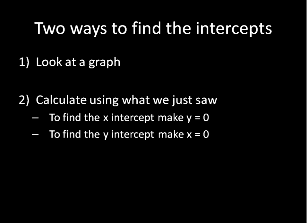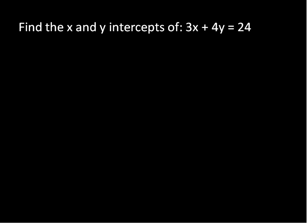So there are two ways to find intercepts. First off, if you're given a nice clear graph, you can just look at it and see when does it cross the x-axis and when does it cross the y-axis. When we're not given a graph, or if the graph isn't terribly clear, you can calculate using just what we saw. To find the x-intercept, make y equal to 0. And to find the y-intercept, make x equal to 0.